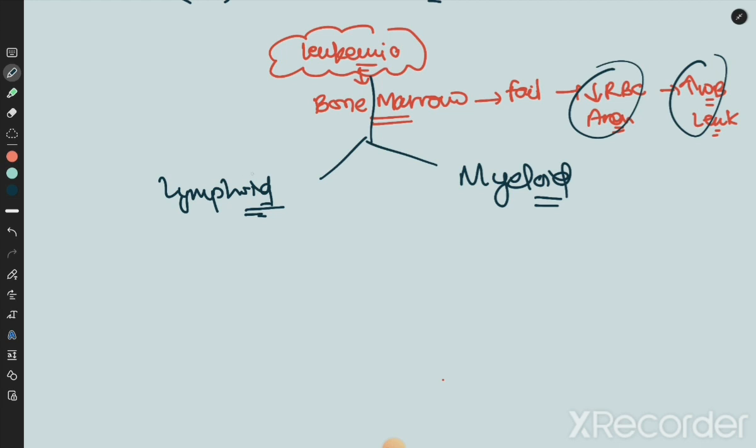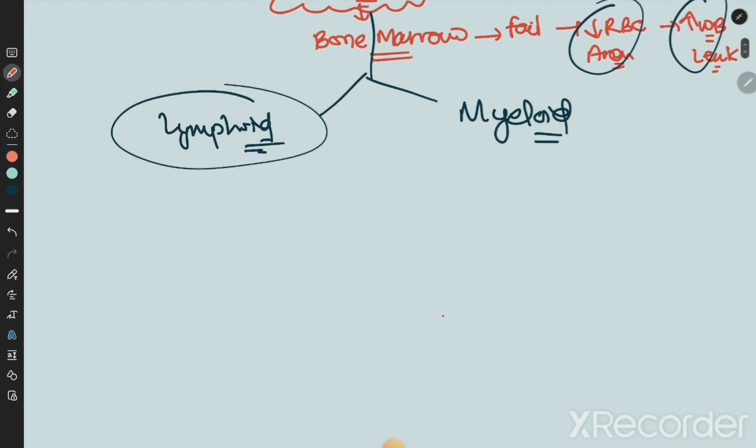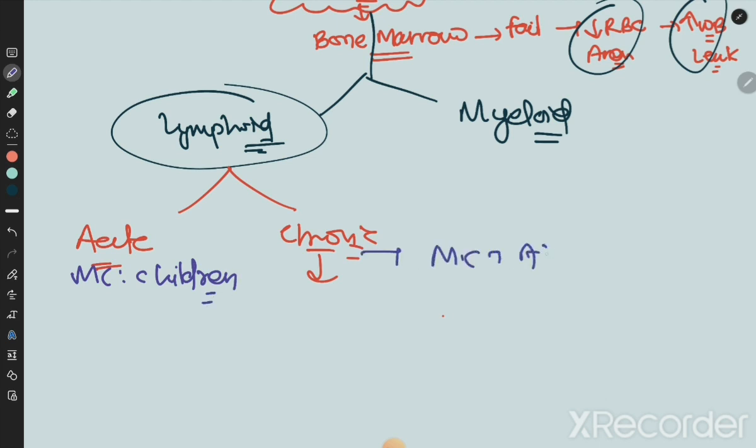Next classification is acute and chronic. The defining features: acute is most common in children, chronic is most common in adults and old age. This is the first keyword. Second, Gumprecht shadows are present.